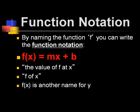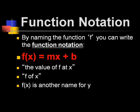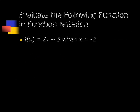The last thing we're going to talk about is function notation — a way to write functions. We call this f(x), or f parenthesis x. The f is not a variable; f stands for function. This isn't f times x. It stands for the value of f, or the value of the function at x — also called f of x. f of x is another name for y; anywhere you see y, you can plug in f of x.